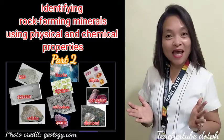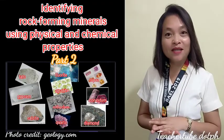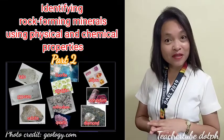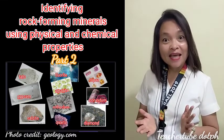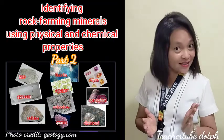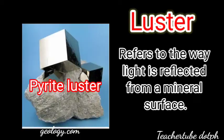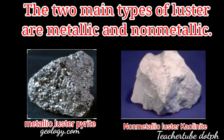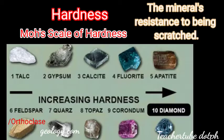Today you're going to be learning about identifying rock-forming minerals using their physical and chemical properties. Luster refers to the way light is reflected from a mineral surface. There are two main types of luster: metallic and non-metallic. Pyrite is an example of metallic luster, and kaolinite is an example of non-metallic luster.